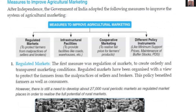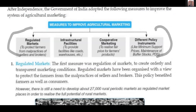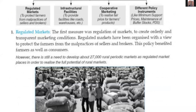Measures to improve agricultural marketing — this is a very important part of this chapter. The first measure was regulation of markets to create orderly and transparent marketing conditions. Regulated markets have been organized with a view to protect the farmers from the malpractices of sellers and brokers. This policy benefited farmers as well as customers. However, there is still a need to develop about 27,000 rural periodic markets as regulated market places in order to realize the full potential of rural markets.